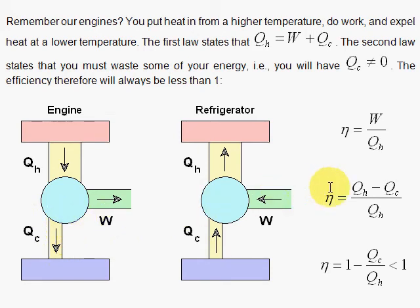So we subtract the heats, Q H minus Q C, and divide by Q H. And we get this nice result, which is one minus the ratio of the cold to the hot Q.